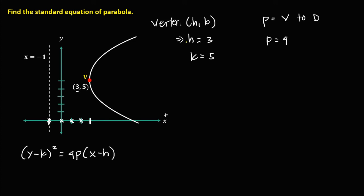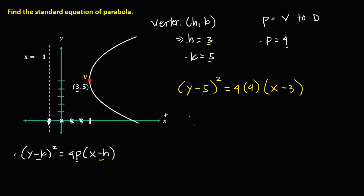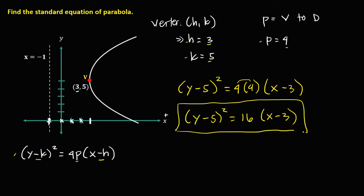Substitute the values into the formula: y minus k — k is positive 5 — so y minus 5, squared, equals 4 times p — p is 4 — times x minus h — h is positive 3 — so x minus 3. Simplifying: y minus 5, squared, equals 16 times x minus 3. This is the standard equation of this parabola.